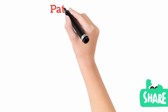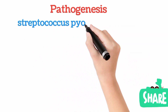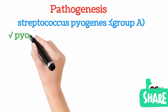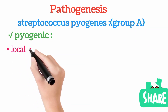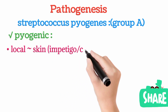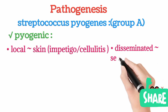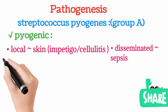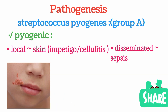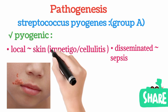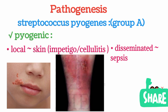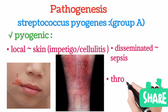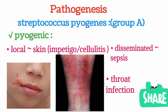Now we will discuss pathogenesis — the mechanism by which these organisms cause disease. The first organism is Streptococcus pyogenes, which is group A beta-hemolytic Streptococcus. Since it is pyogenes, it causes pyogenic infection, meaning pus-producing. It can cause local infections at the level of the skin, including impetigo and cellulitis — local skin inflammation reactions. It can also cause disseminated infection, spreading into the bloodstream causing sepsis, where multiple organs are involved. Additionally, it can cause local throat infection.